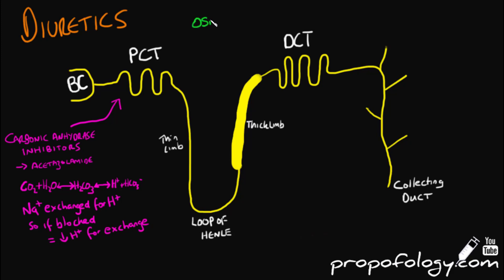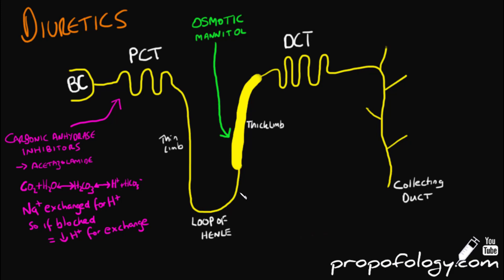Osmotic diuretics act in the loop of Henle. Drugs like mannitol are freely filtered by the glomerulus and are not reabsorbed. Water follows mannitol as the osmolality of the filtrate is increased. So mannitol is stuck within the nephron tube and cannot escape, but it can drag water in with it — and that's how it has its diuretic effect.